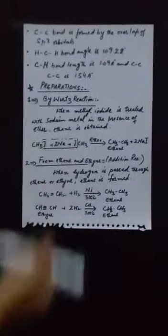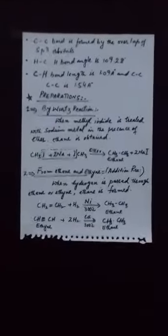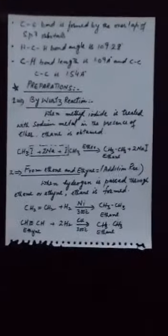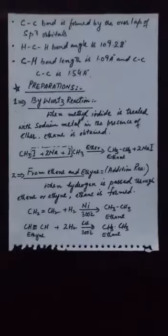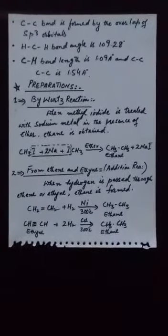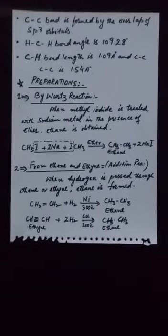First method is by Wurtz reaction. This reaction is known as Wurtz reaction because this reaction was performed by Wurtz scientist. In this reaction, when methyl iodide is treated with sodium metal in the presence of solvent ether, ethane is obtained.